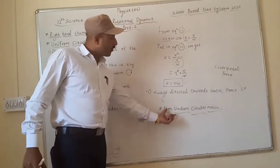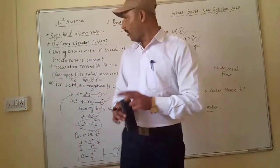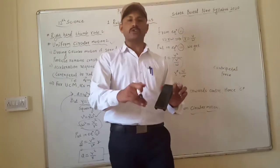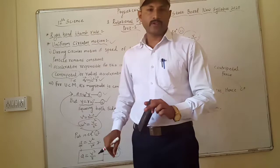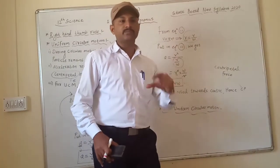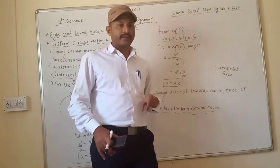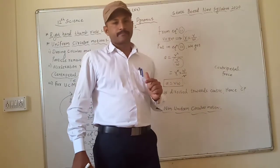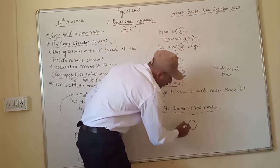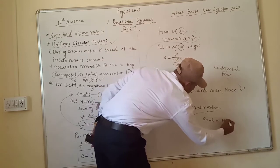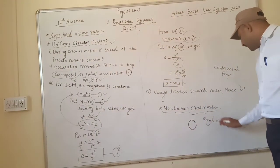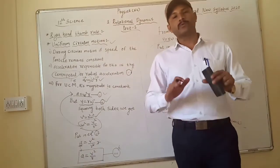Next is the non-uniform circular motion — a very simple concept since we already understand uniform circular motion. In uniform circular motion, the speed of the particle is always constant. Opposite to that, in non-uniform circular motion, the particle moves in a circular path but the speed is not constant; it is changeable.